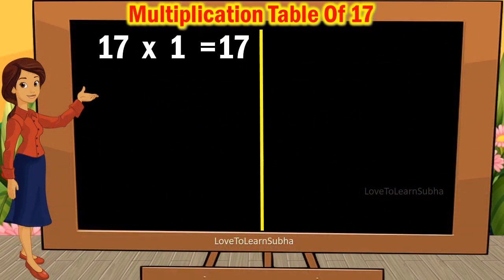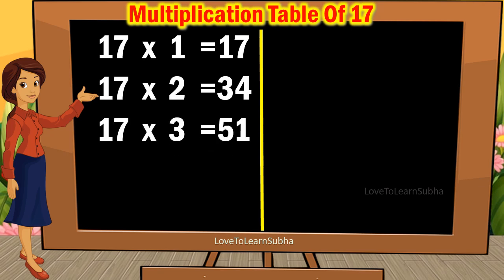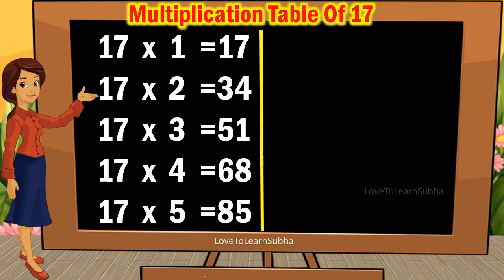17 ones are 17, 17 twos are 34, 17 threes are 51, 17 fours are 68, 17 fives are 85,